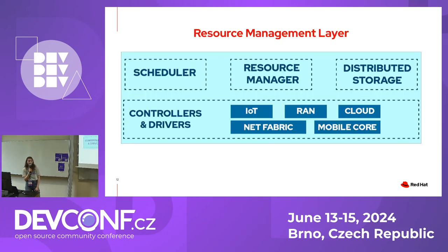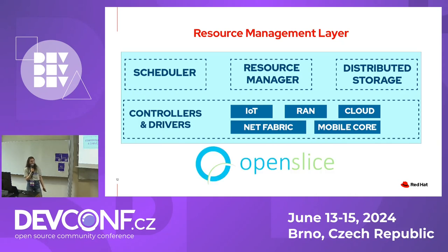There are many different components to the resource management layer: a scheduler, resource manager, distributed storage, and the controllers and drivers for the various different territories involved. The key to all of this is OpenSlice, an operations support system used by many different telco companies to manage their networks. There is a catalog in OpenSlice which has all the different offerings available — networking functions, deploying a 5G slice, a 5G-RAN slice, or deploying OpenShift.